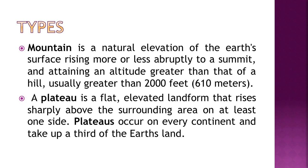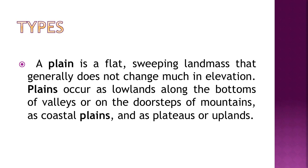A mountain is a natural elevation of the earth's surface rising more or less abruptly to a summit, attaining an altitude usually greater than 2,000 feet. A plateau is a flat elevated landform that rises sharply above the surrounding area on at least one side — plateaus occupy about a third of earth's land. A plain is a flat, sweeping landmass that generally does not change much in elevation.